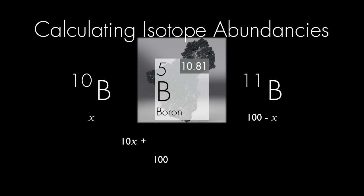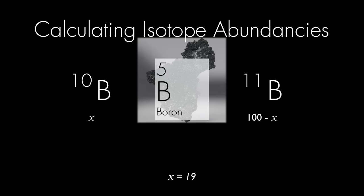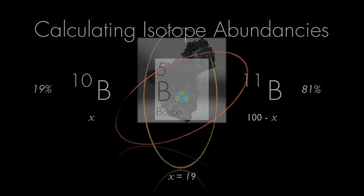We can put this together to calculate the average atomic mass, which we already know for boron, if we look at the periodic table. Do a little algebra, and it tells us that x is equal to 19, which is a percentage of boron-10, and therefore, boron-11 has an abundance of 81%.